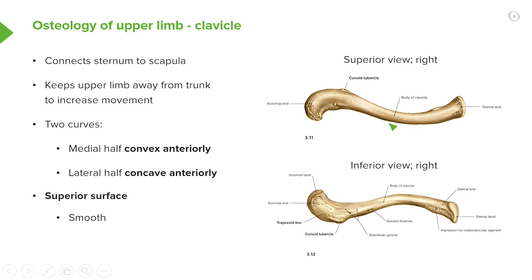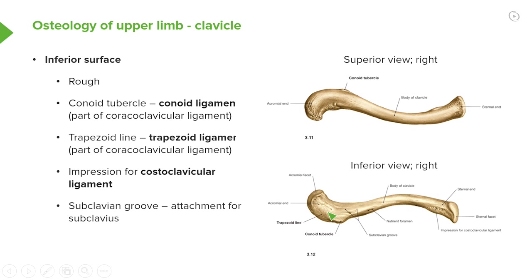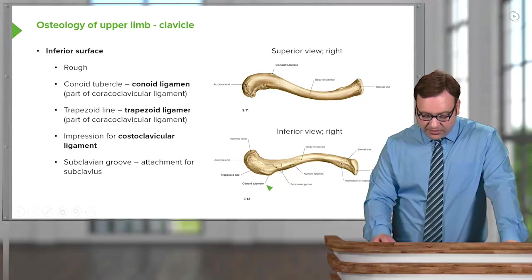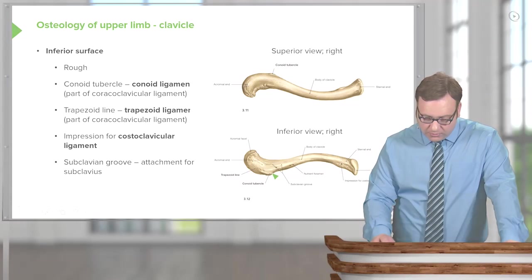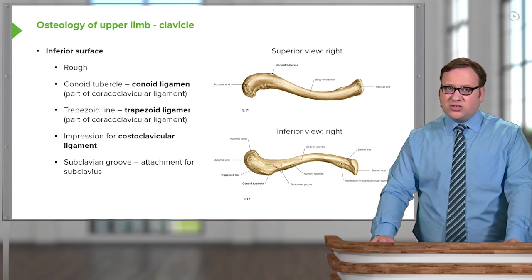Moving to the inferior surface — as if we're standing underneath the clavicle and looking up — we can see that it's roughened, with a whole series of tubercles and features important for articulation with ligaments. We have what's known as the conoid tubercle, situated by the acromial end. This is part of the coracoclavicular ligament, which we'll talk about in more detail later. Connecting the conoid tubercle to the acromial end is the trapezoid line — a slightly roughened area where the trapezoid ligament attaches.